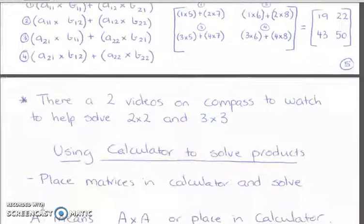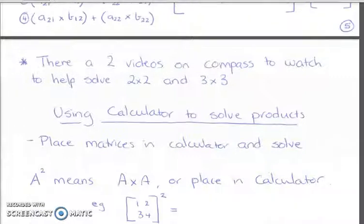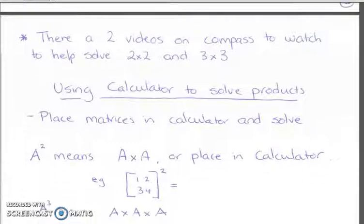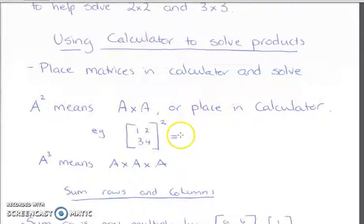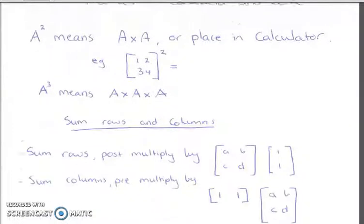So as I said, there's two videos on compass that you can watch for multiplying 2 by 2 and 3 by 3 matrices. Once again, you can just place any of the matrices in your calculator to do the problem, whether it's put a little square at the top or do A times A, you can definitely do that in your calculator and it gets you to the answer very, very quickly.